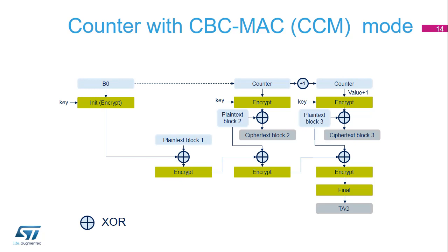In counter with cipher block chaining message authentication code mode, or CCM, the payload part of the plain text message is encrypted, while a message authentication code is computed for the complete message in parallel, thus generating the corresponding ciphertext and the corresponding MAC, also known as a tag. CCM mode is based on AES in counter mode for confidentiality, and uses CBC for computing the message authentication code. It requires an initial value. The CCM standard defines specific encoding rules for the first authentication block, called B0, which includes flags, a nonce, and the payload length expressed in bytes. Like GCM, the CCM chaining mode could be applied on a message composed only by plain text authenticated data — that is, only header, no payload — but it's not recommended by NIST.